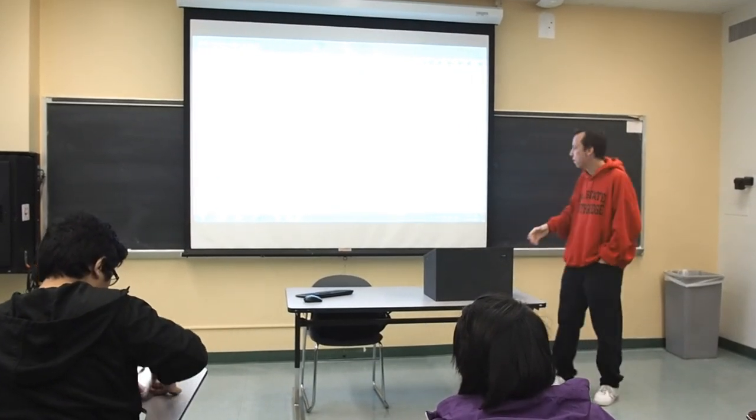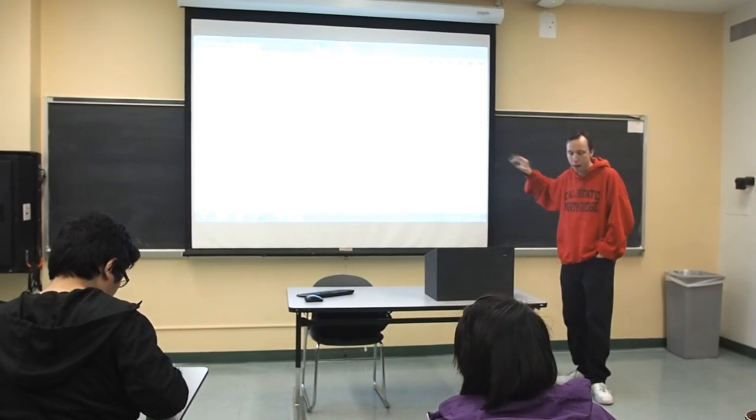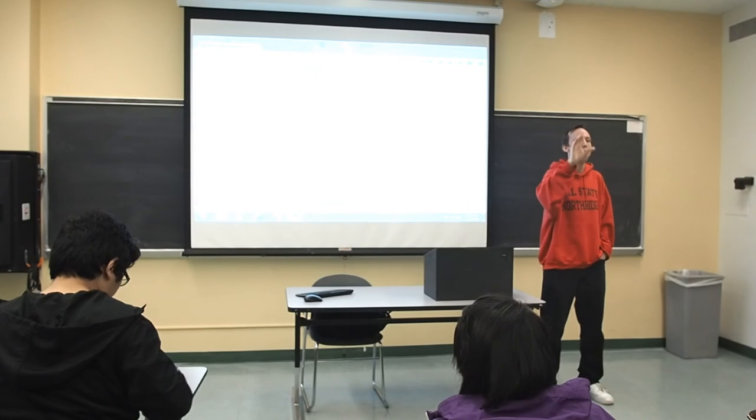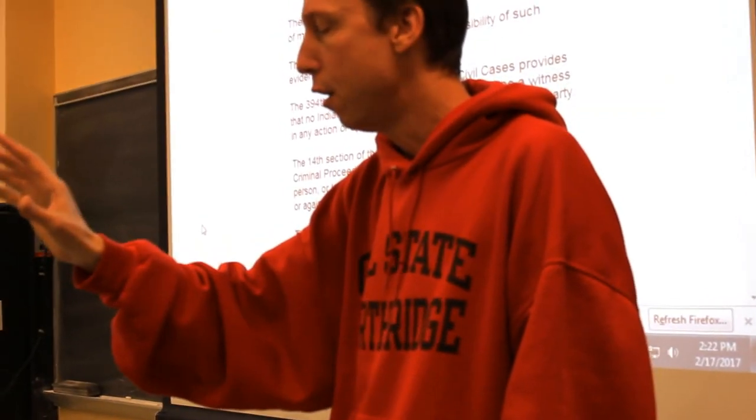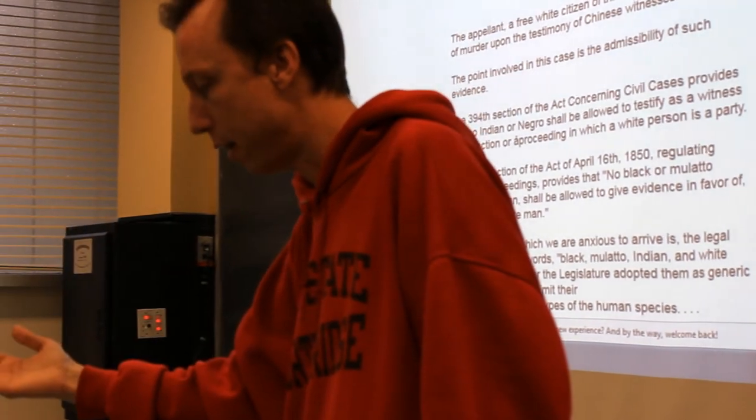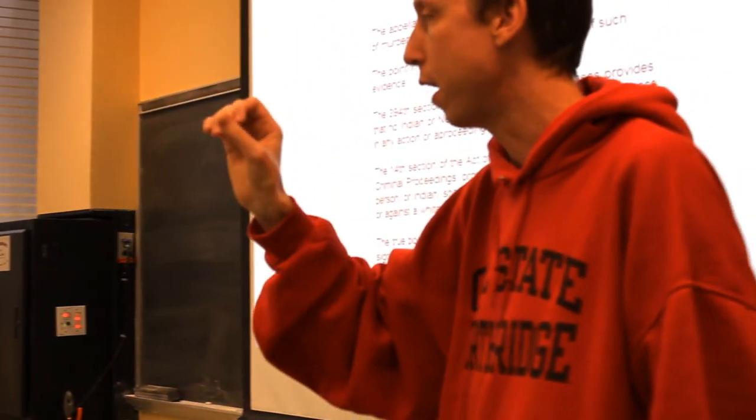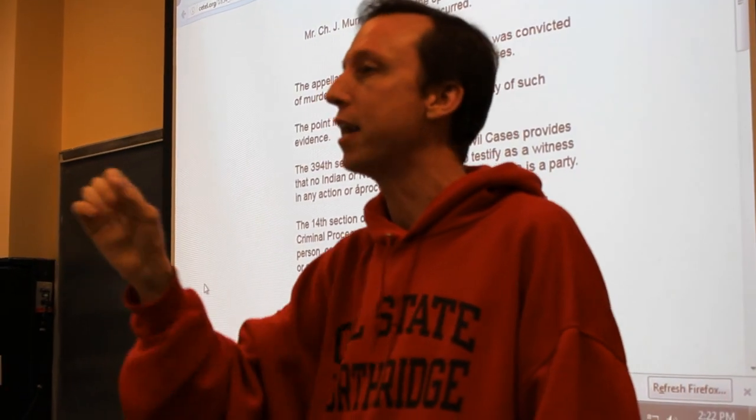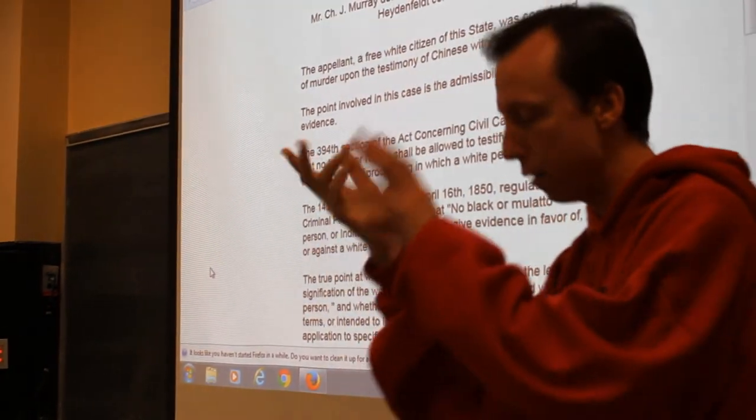So the background for this case, we see they're coming here, they're becoming miners, they're mining for gold. And the background is George Hall. That's his name. So make sure to write him down. George Hall, a white miner, has killed Ling Sing. L-I-N-G S-I-N-G, Ling Sing. So George Hall, a white miner, has killed Ling Sing, a Chinese miner, over a dispute that occurred there.